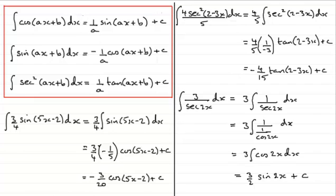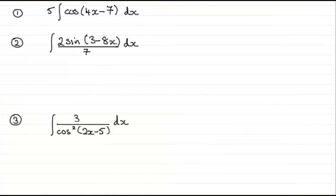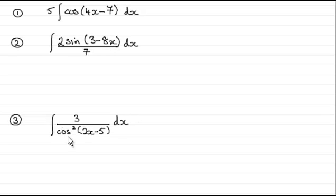I hope that's given you some idea. Here are a few examples for you to try. In the first question, integrate 5 cos(4x − 7) with respect to x. In the second, the integral of 2 sin(3 − 8x) divided by 7. And in the third, 3 all divided by cos²(2x − 5). If you'd like to have a go, pause the video now, and when you come back you can check your answers against mine.